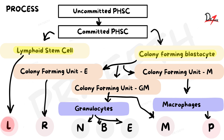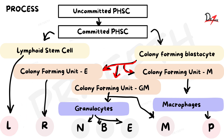Lymphoid stem cells give rise to lymphocytes and natural killer (NK) cells. Colony forming blastocysts give rise to all other types of cells except lymphocytes. They differentiate to form different colony forming units, including the colony forming unit for erythrocytes which form RBCs, granulocytes or monocytes that form different granulocytes, and megakaryocytes which develop into platelets.